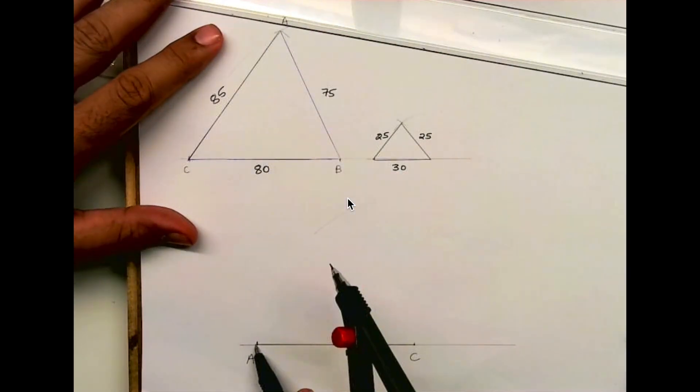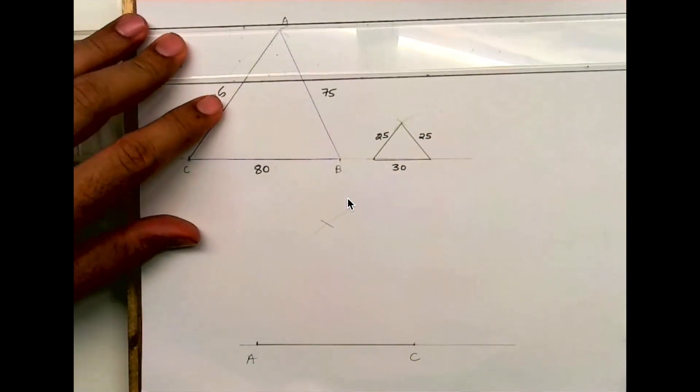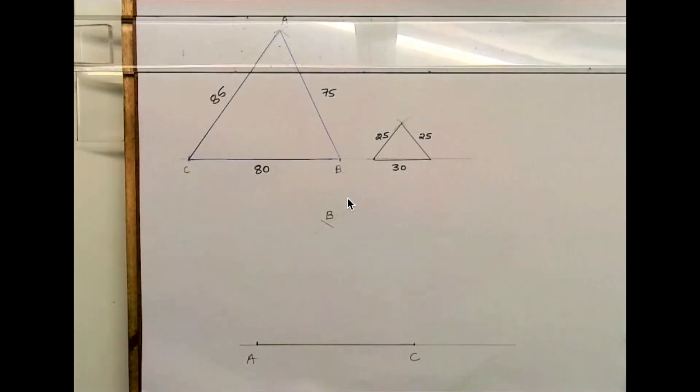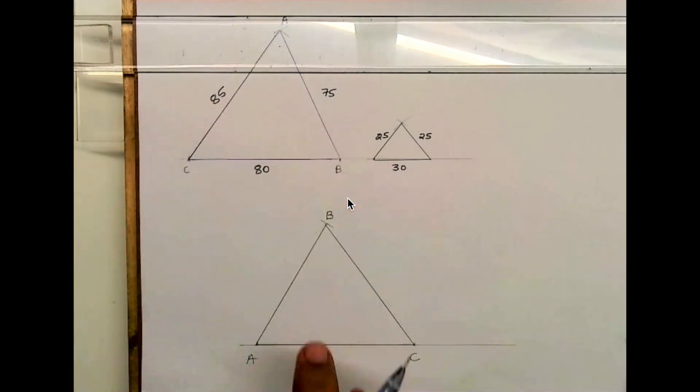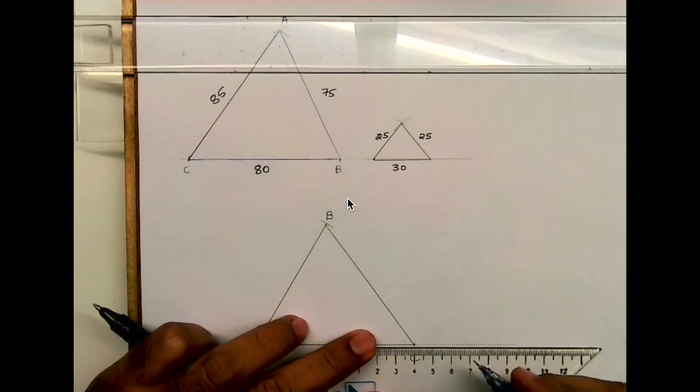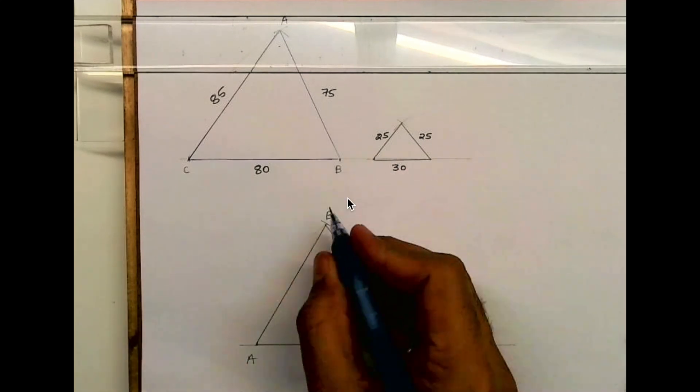Now I'm drawing the triangle again. Remember the maximum side will come at the bottom. In this case the maximum side is 30, so 30 will come at the bottom.